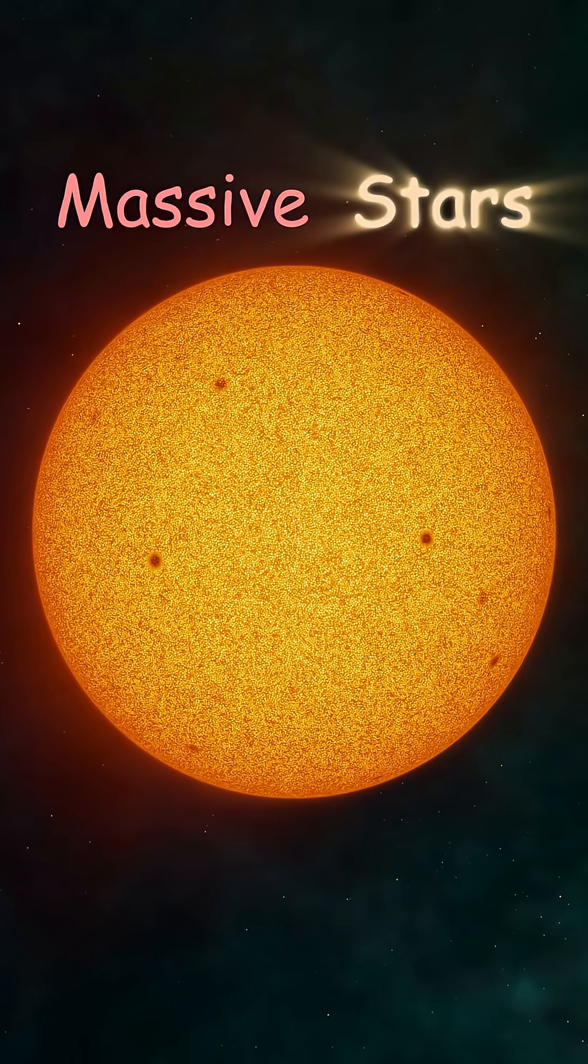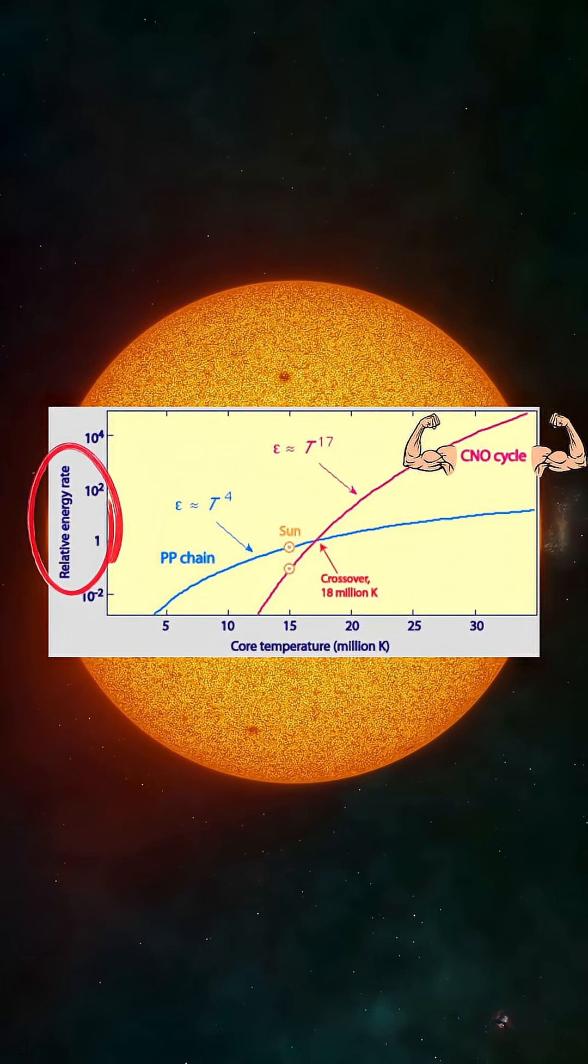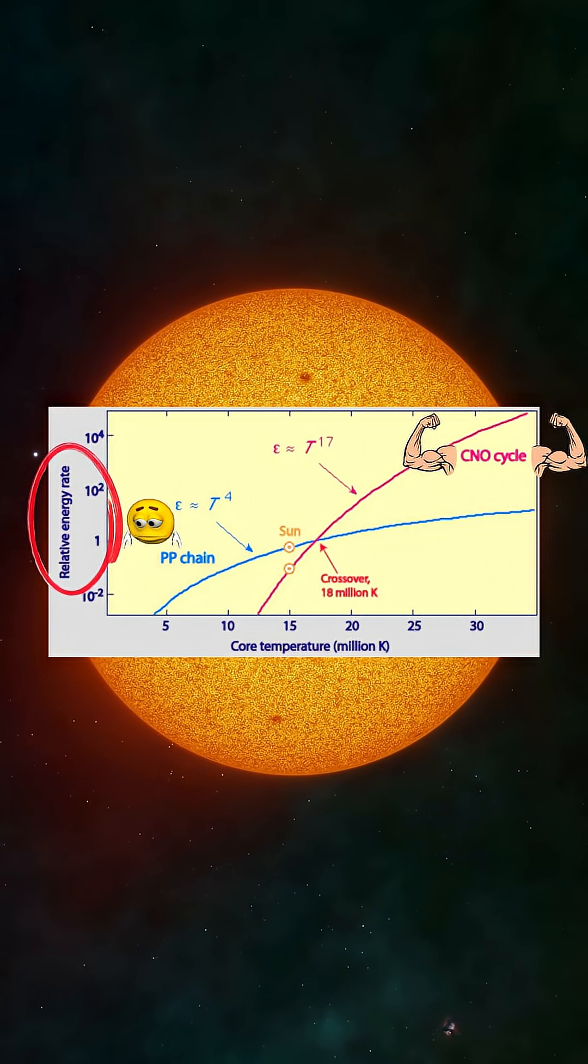Now, massive stars rely on the CNO cycle because their hotter cores can sustain it, and it fuses hydrogen far more quickly than the proton-proton chain.